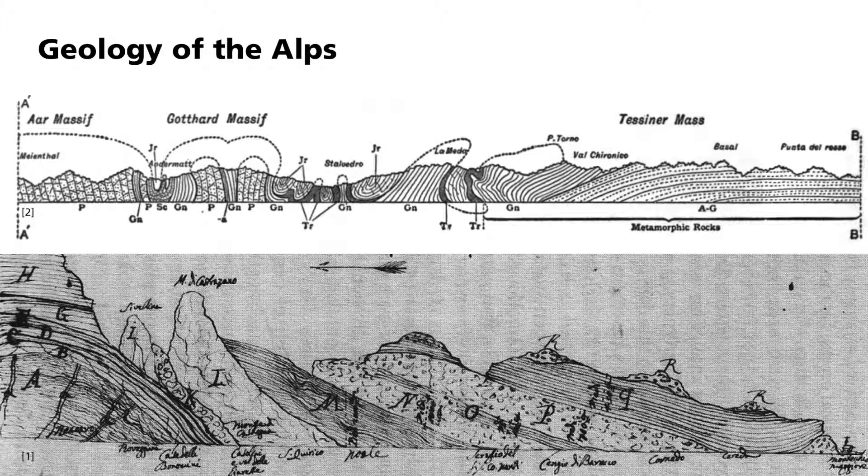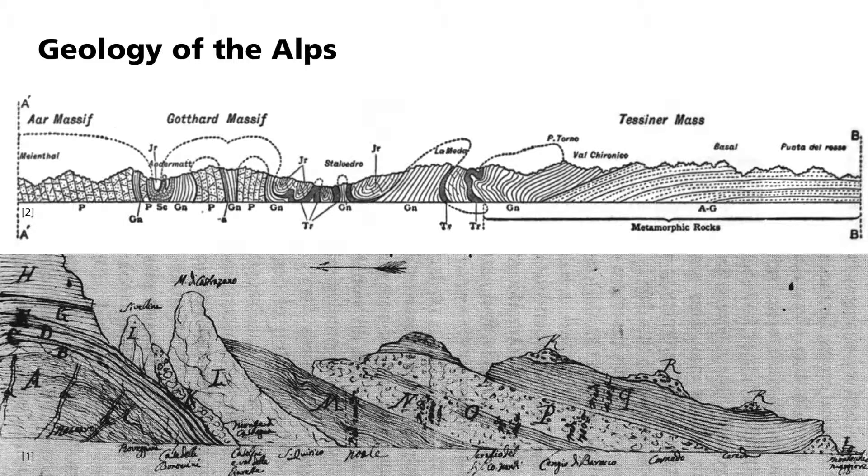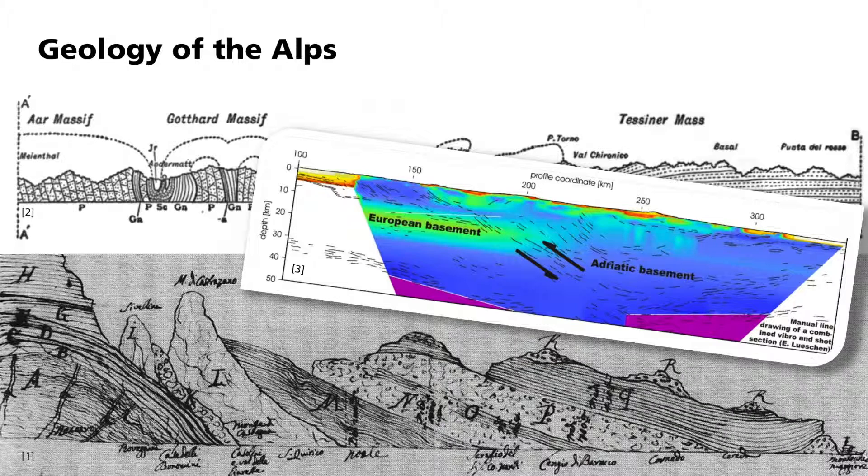More recently, the methods of seismics were used to explore the deep structure of the Alps. In 1998 and 1999, a large-scale seismic survey was carried out in the Eastern Alps. The project was called TransAlp. Various seismic procedures were used for the measurement and evaluation of the data. One of them was wide-angle seismics, which uses reflections and refractions over very long distances.